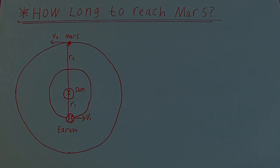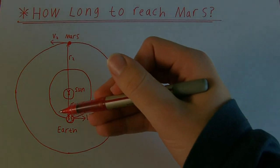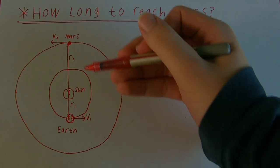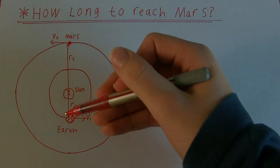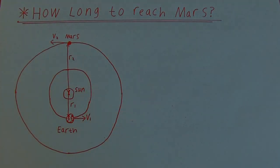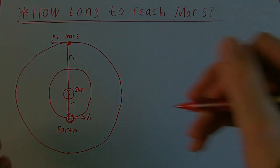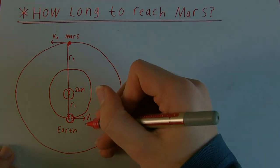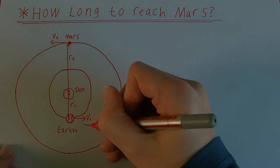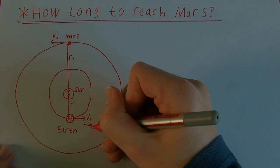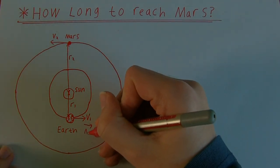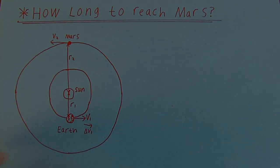In order to actually reach Mars, we're not travelling fast enough just sitting on the Earth — we're going to have to increase our velocity, give ourselves a little delta V, a little extra kick, which I'm going to call delta V1.